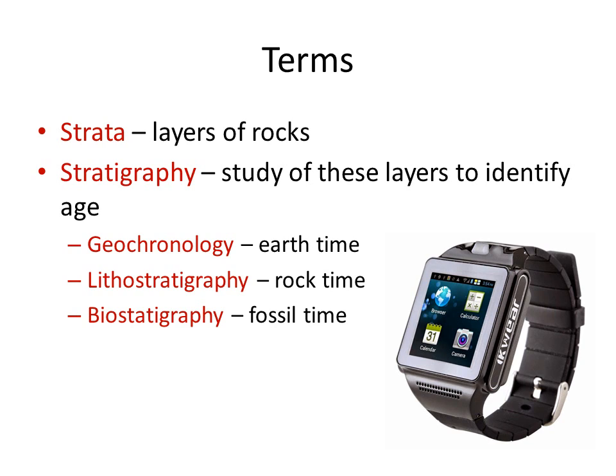Within stratigraphy, we identify time in three major ways. We use geochronology, which is Earth time, which we use isotopes to do. We use lithostratigraphy, which is rock time, and we use that by physically knowing where layers are relative to another layer. And we use biostratigraphy, which is looking at fossils to give us an indication of how old a rock is relative to another.